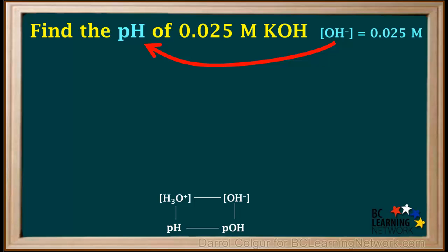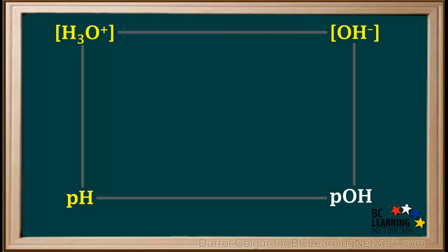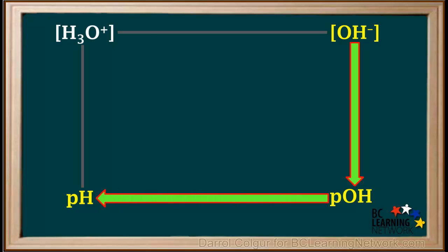So we have the hydroxide ion concentration and we want to find the pH. We could go from hydroxide ion concentration to hydronium ion concentration to pH, or from hydroxide ion concentration to pOH and then to pH.